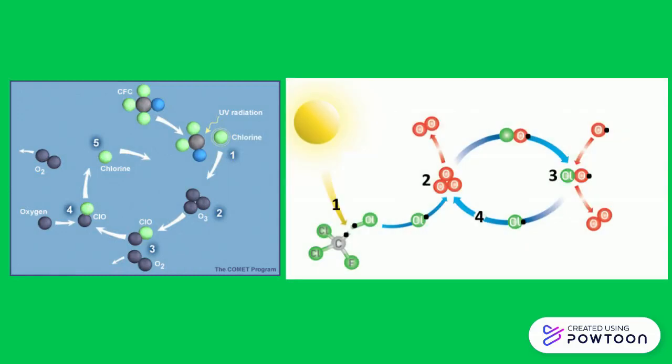The chloride anion acts as a catalyst, depleting ozone without using itself up, allowing for a small amount of CFC to cause extensive and substantial damage to the ozone layer.